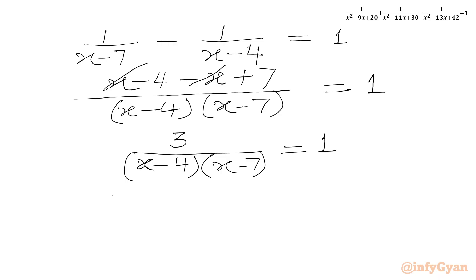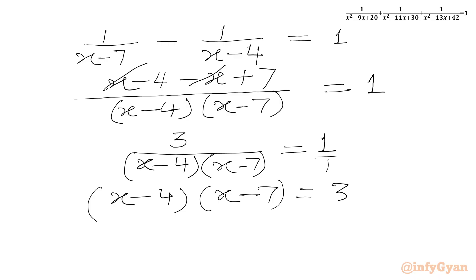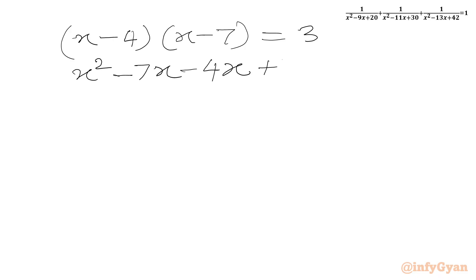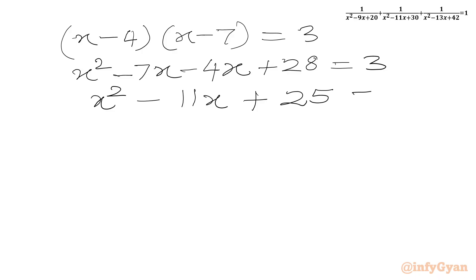Now we will cross multiply and write (x minus 4)(x minus 7) equals 3. Now we will expand the LHS: x squared minus 7x minus 4x plus 28 equals 3, or x squared minus 11x plus 28 minus 3 equals 0, giving x squared minus 11x plus 25 equals 0. This is a quadratic equation.